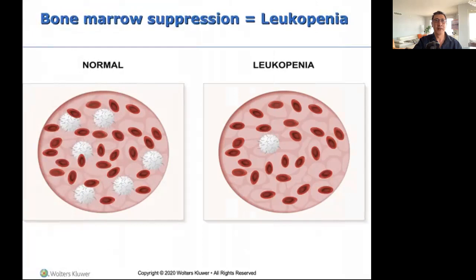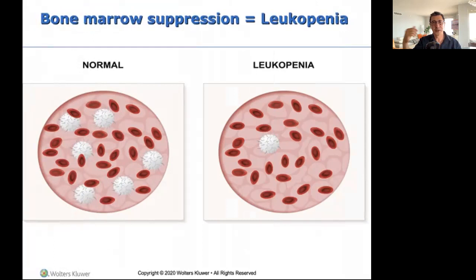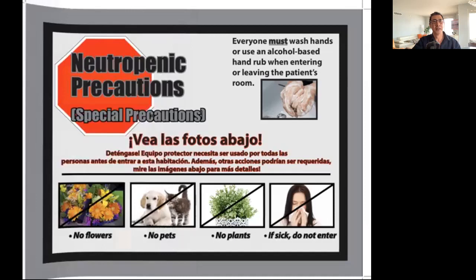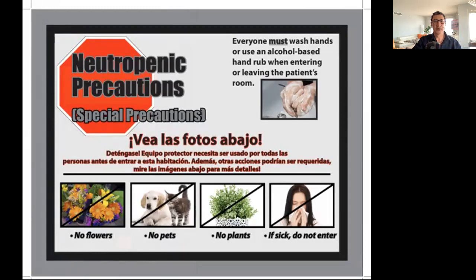Patients with leukopenia and low WBCs will be placed on neutropenic (reverse) isolation. Unlike contact or airborne isolation where we don't want to take the patient's bacteria home, in neutropenic isolation we don't want to bring anything INTO the patient. Their immunity is essentially zero — any bacteria we introduce could kill them.